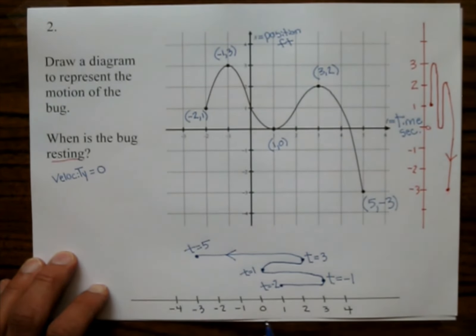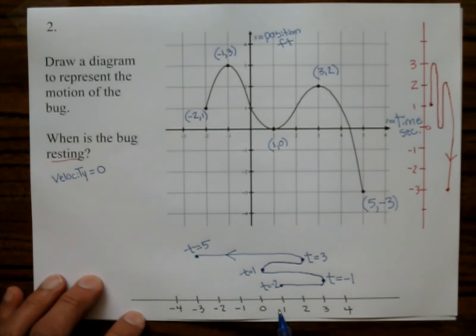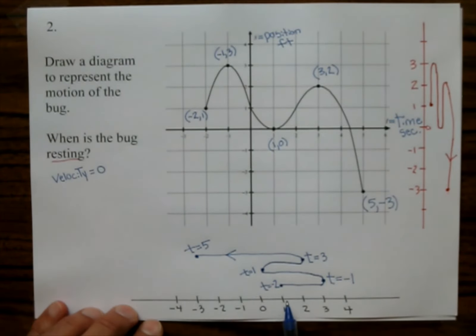So resting means velocity zero. That means you're not going to the left. You're not going to the right. And it could just be really quickly. And so it looks like your rest times are where? The rest times happen to be.